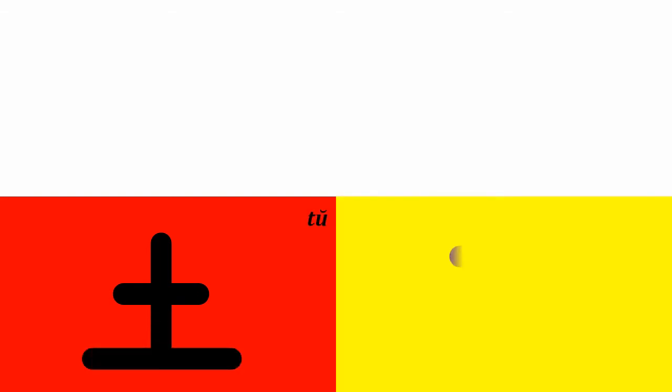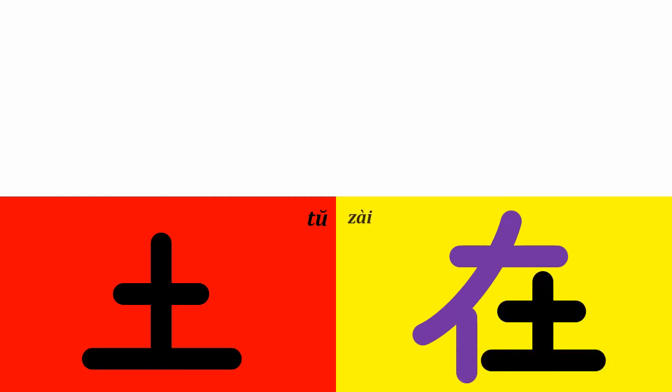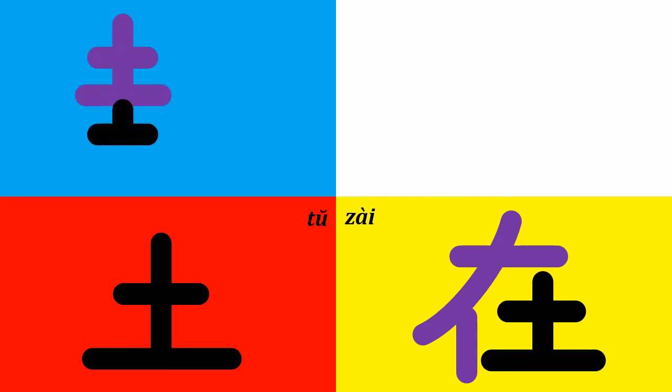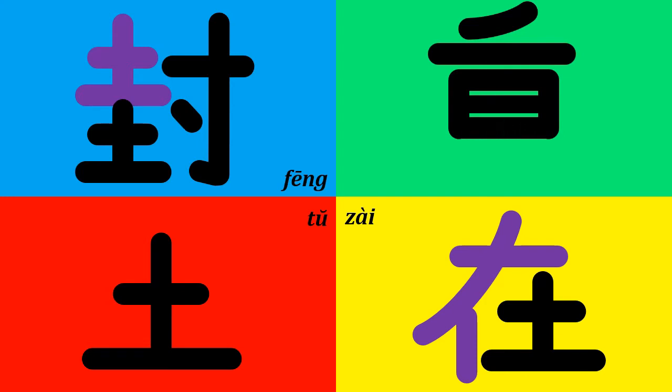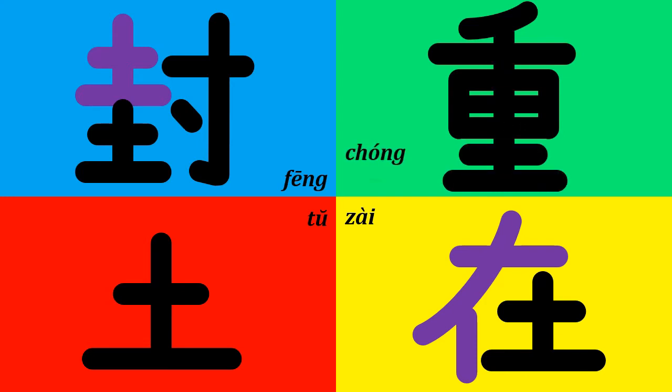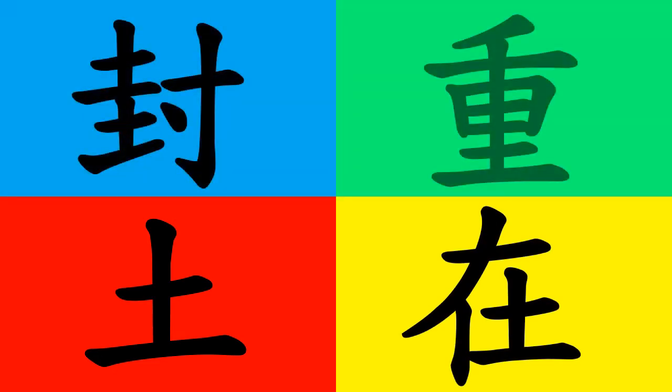Here is our color chart with today's six characters and their correct stroke order: 土, 在, 封, 重, 坐. The following chart shows how these characters would appear in printed form. To fix the characters in your memory, copy them onto colored sheets of paper as suggested in previous videos — blue, green, pink, yellow, and white. Underline any homonyms and circle those characters with more than one pronunciation.